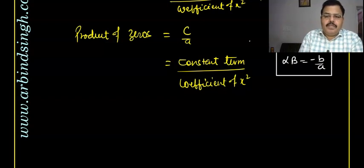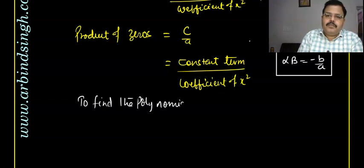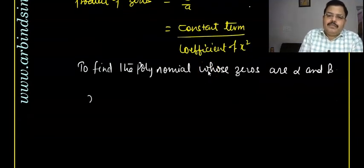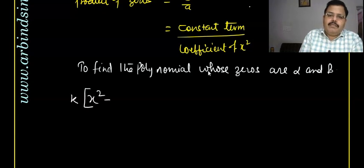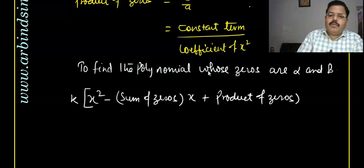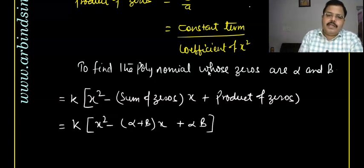If you have the zeros of a polynomial and want to find the polynomial exactly, to find the polynomial whose zeros are alpha and beta, we can write: k times (x² minus sum of zeros times x plus product of zeros). That is: k(x² − (α+β)x + αβ). This is the polynomial formula.